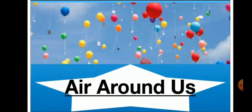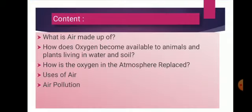So first of all, let's take a view on the topics we will discuss here. In this chapter, you will learn about air: Is air present everywhere around us? What is air made up of? How does oxygen become available to animals and plants living in water and soil? How is oxygen in the atmosphere replaced? Uses of air and air pollution.